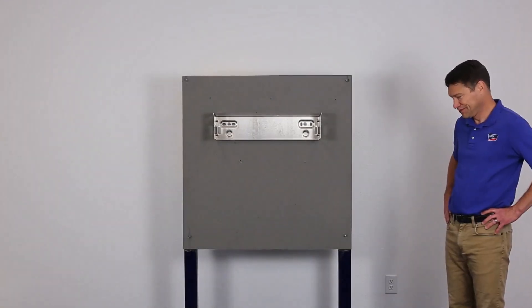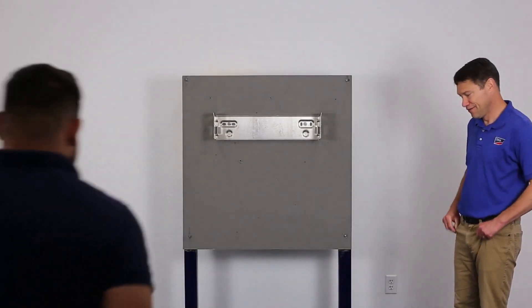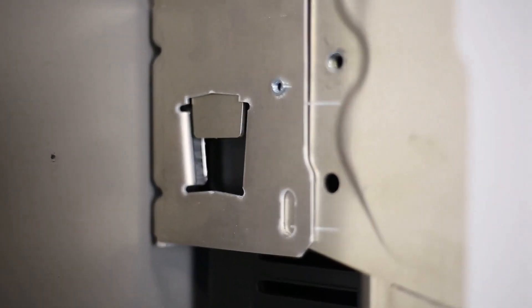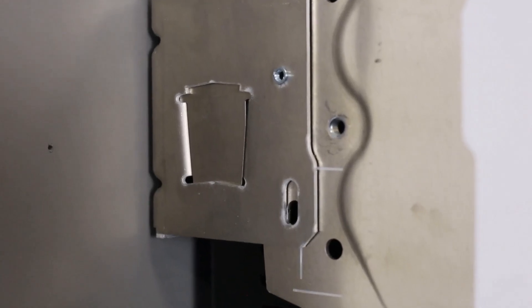With the assistance of two people, hang the inverter on the mounted bracket. Ensure the clips on both sides of the inverter body slide securely into the slots on each side of the bracket.